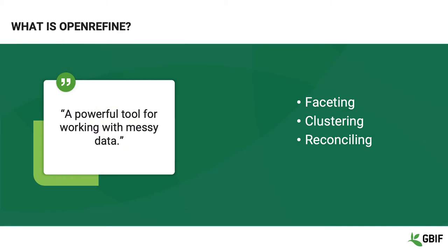OpenRefine is a powerful tool for working with messy data. OpenRefine supports faceted browsing as a mechanism for seeing a big picture of your data and filtering down to just the subset of rows that you want to change in bulk. The clustering feature works by trying to group the choices in the text facet so that choices that look similar get grouped together.